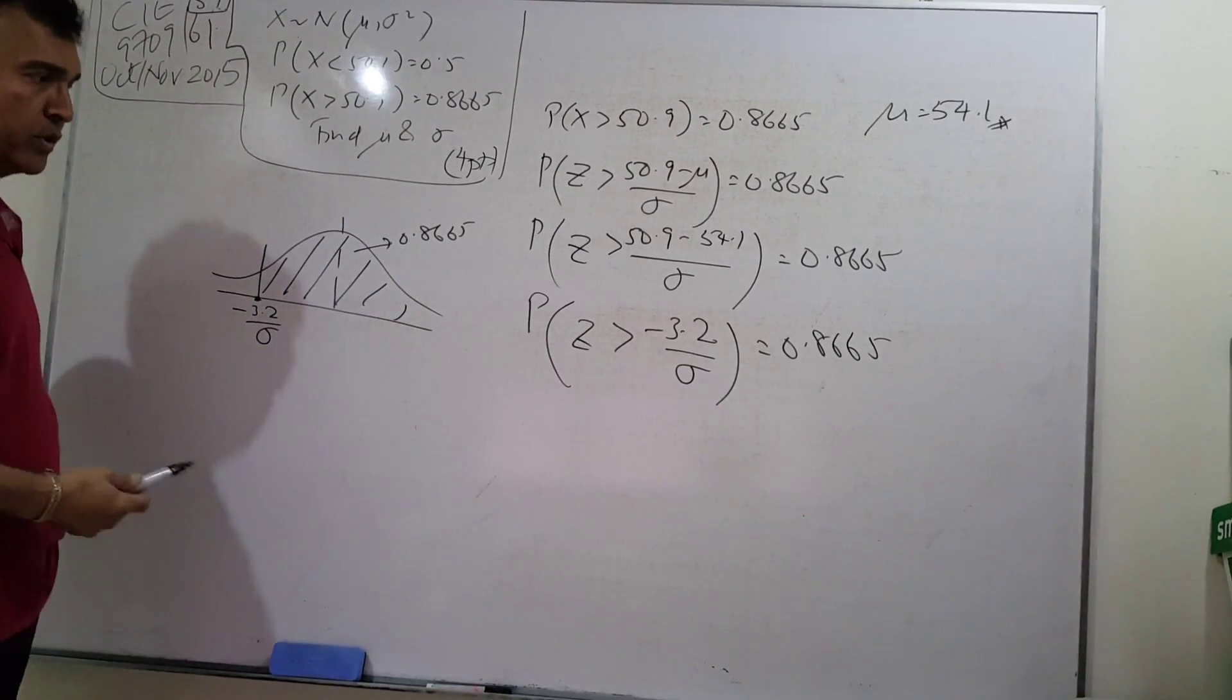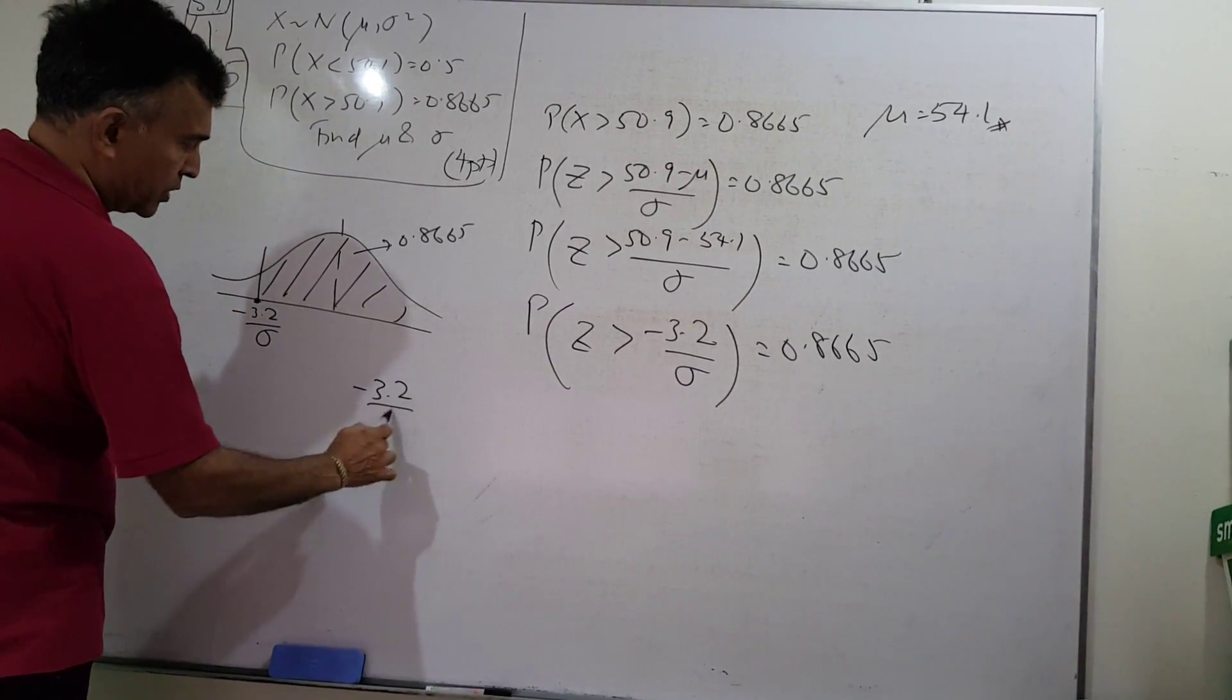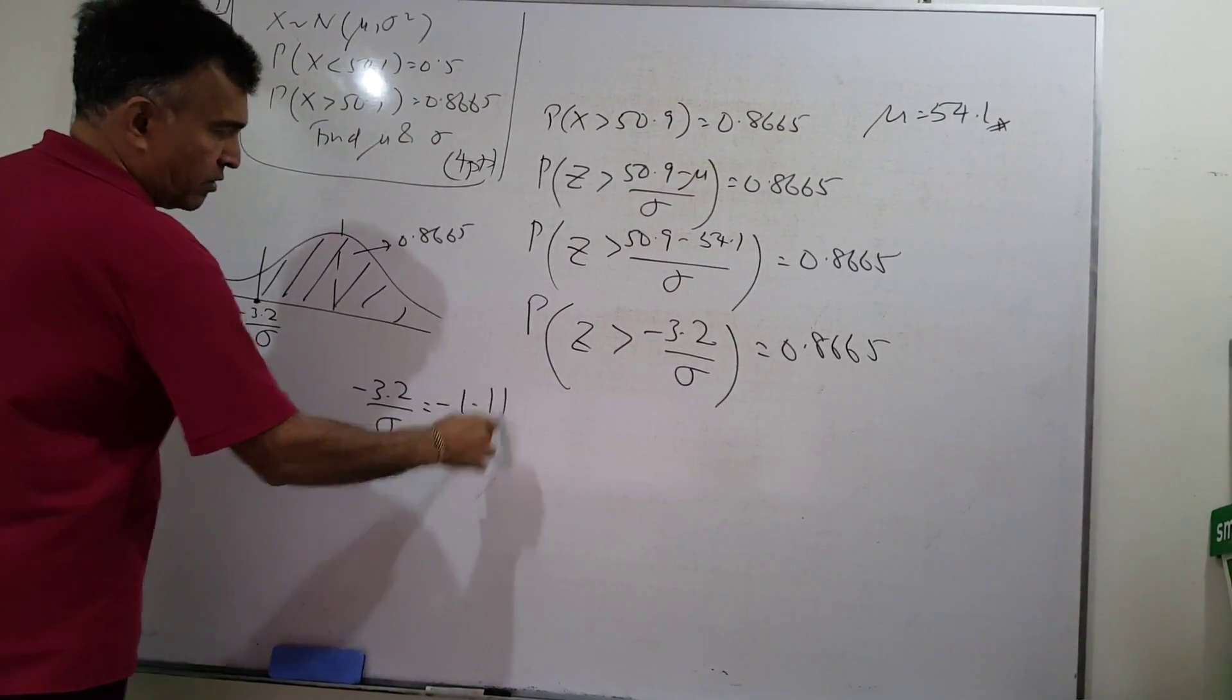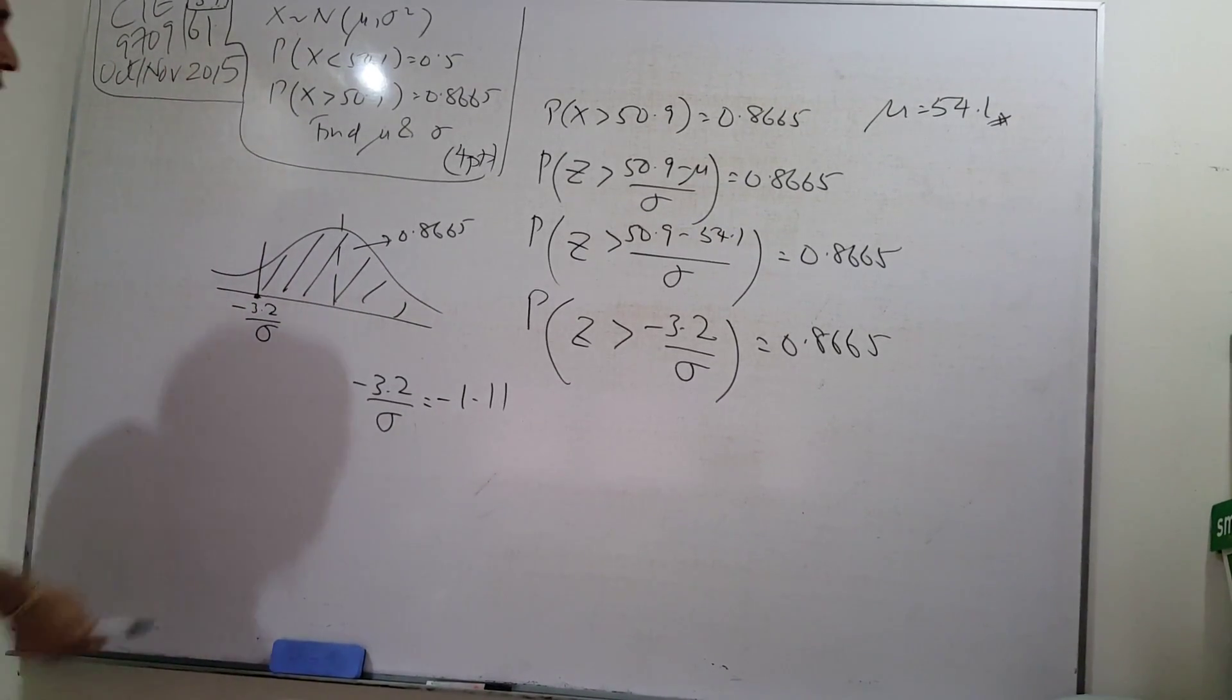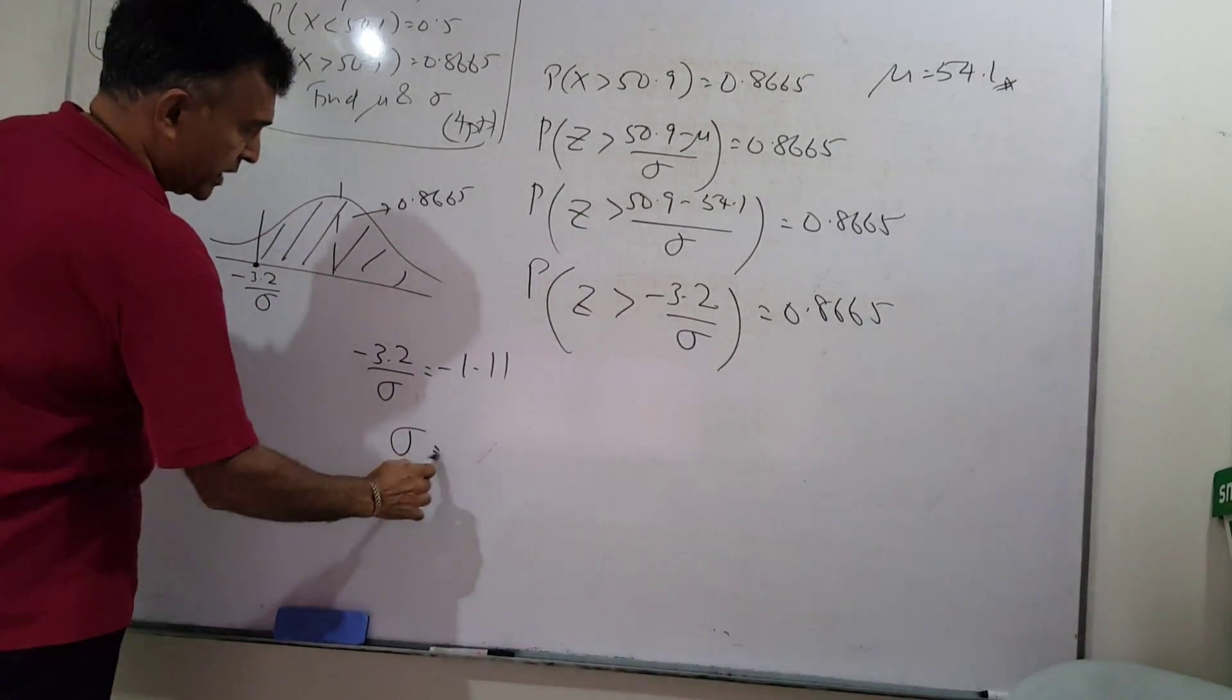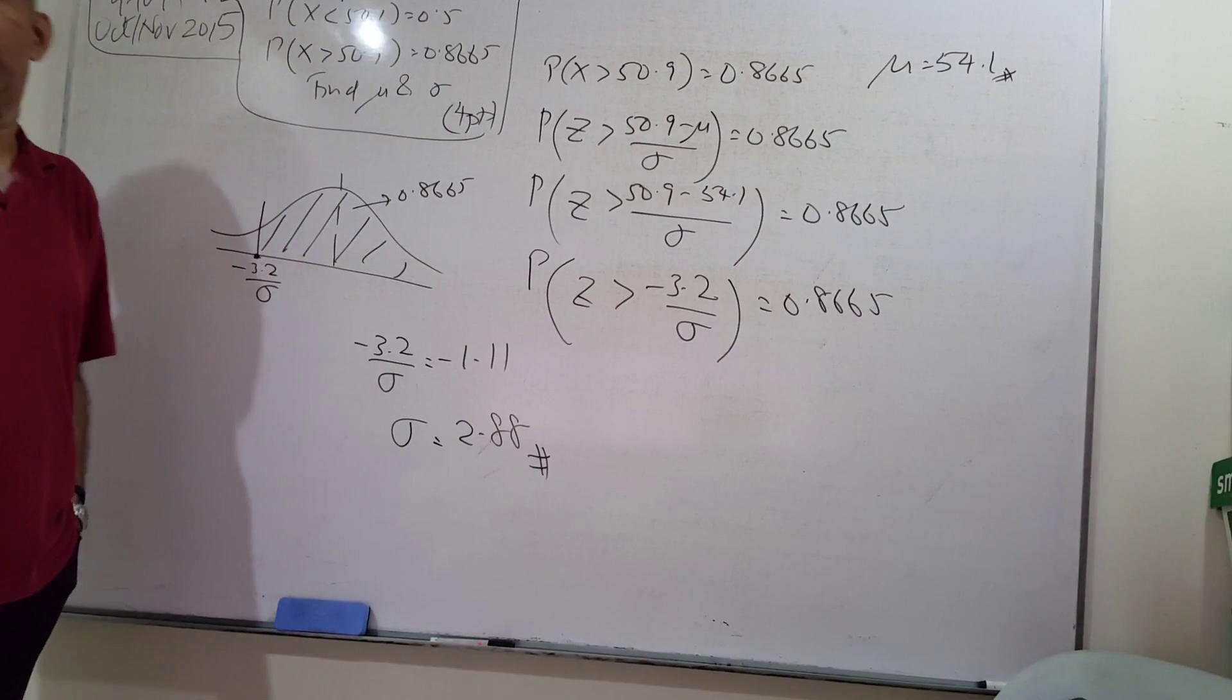Open up your tables, read the value, you will get minus 3.2 over σ equals negative 1.11. Then you can use your calculator and work out the value for σ, which will be 2.88. Use the calculator and you'll be done.